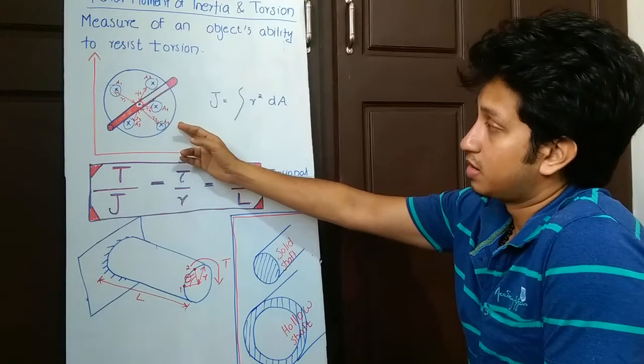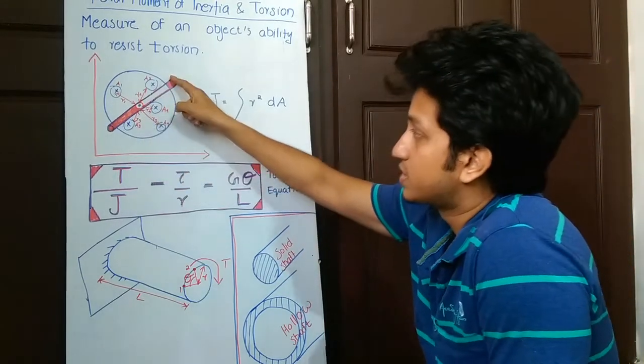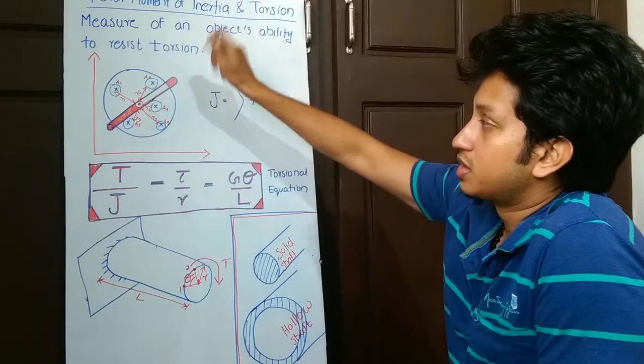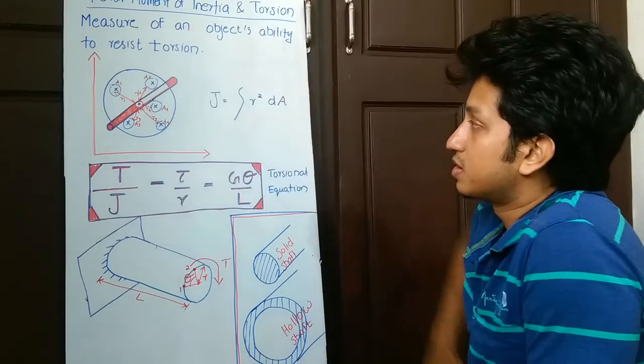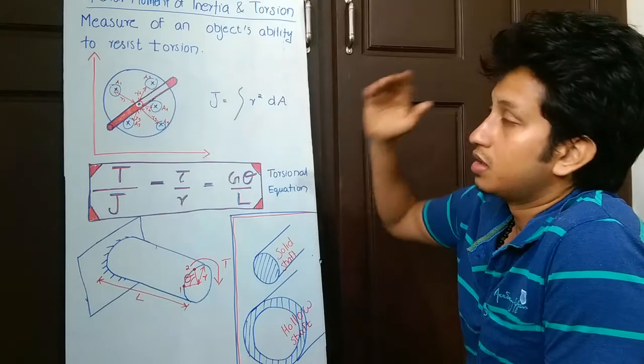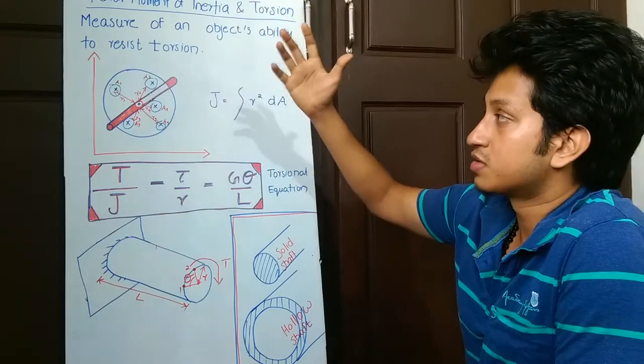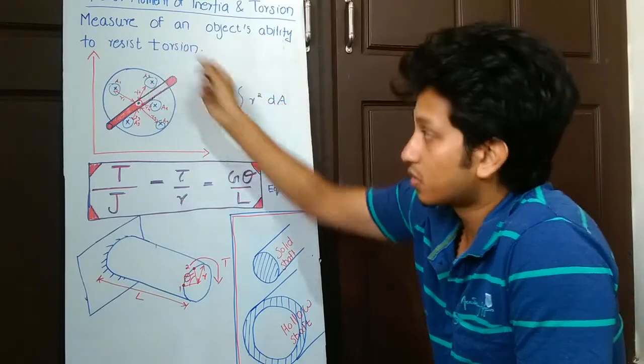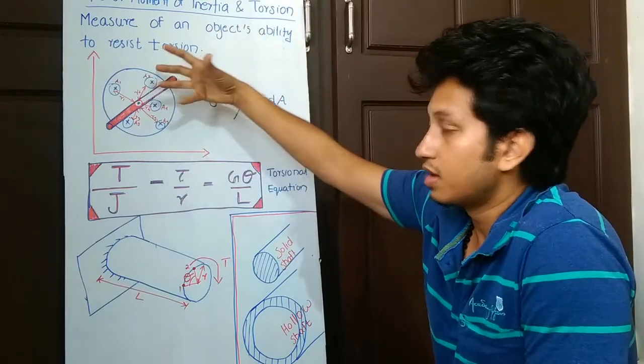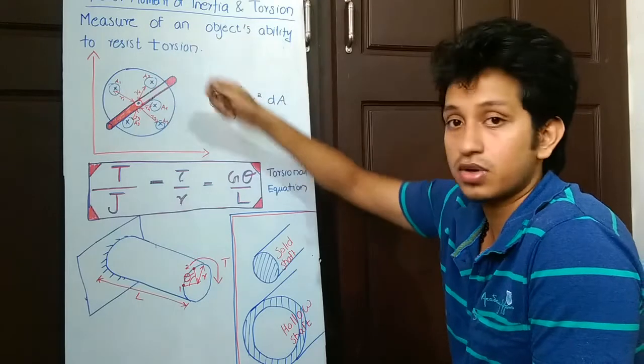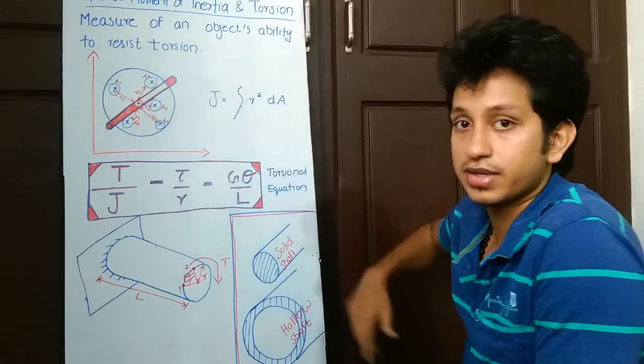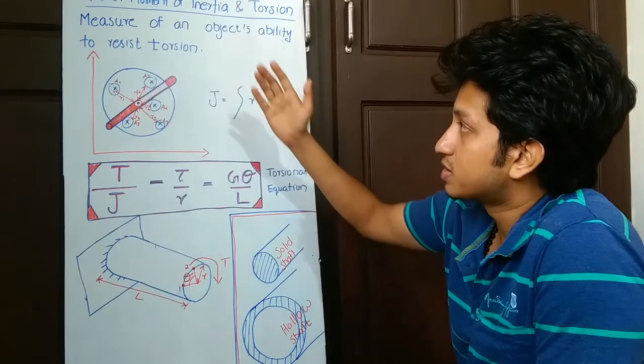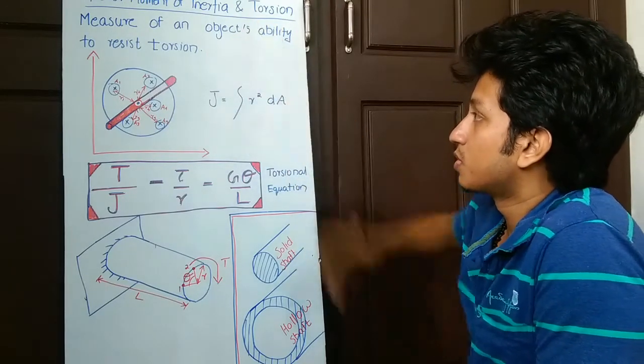Consider a circular disk mounted on this red shaft. If it's being rotated, the mass moment of inertia concept was about point masses that resist angular acceleration. When we rotate this and try to accelerate or increase the angular velocity, they resist that acceleration. In the polar moment of inertia concept, when it's being rotated, it resists torsion.